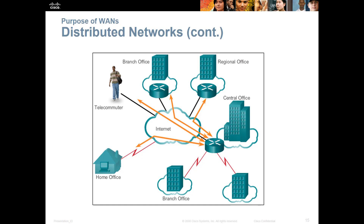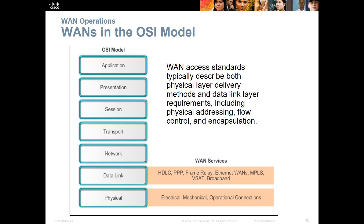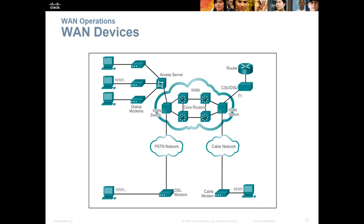But how does traffic go through the internet? The internet has multiple WAN technologies that happen at Layer 2: HDLC, PPP, Frame Relay, Ethernet, Ethernet WANs, MPLS, VSAT, broadband. These are all internet WAN services. For example, looking at the cable network, you could have a plain telephone system and a WAN connection from the cable company. DSL versus broadband — they'll connect to the same ISP. We don't really care how the ISP communicates internally; we just want to use the ISP to reach our devices.